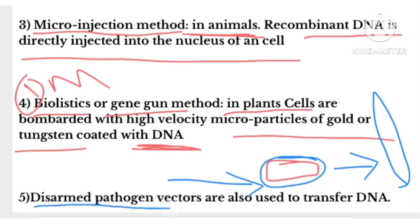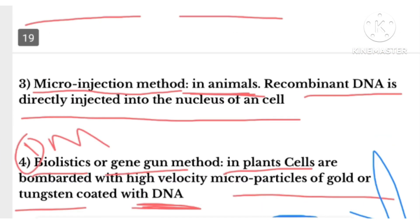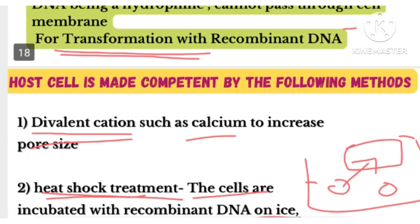The last method uses disarmed pathogens as vectors. Pathogens like retroviruses are disease-causing organisms. Agrobacterium, for example, has a tumor-inducing plasmid that can cause tumors in plants. In this method, the pathogen is disarmed — its disease-causing ability is removed — and then used as a vector to transfer the desired DNA into the host cell.